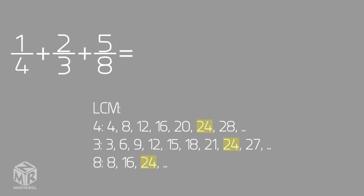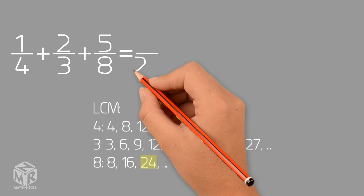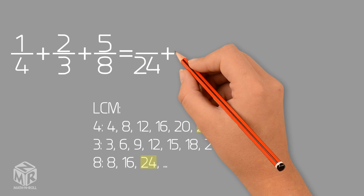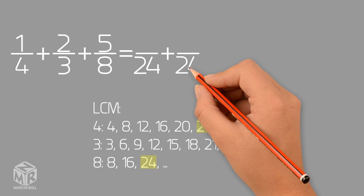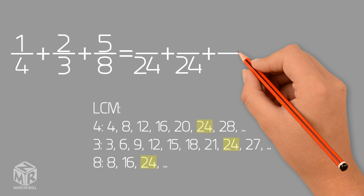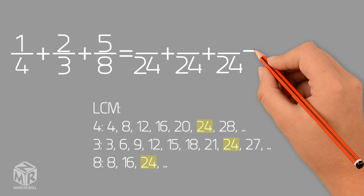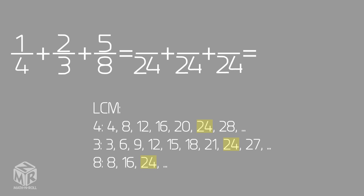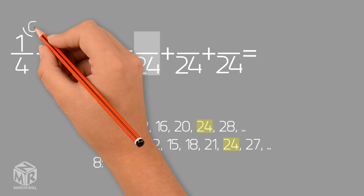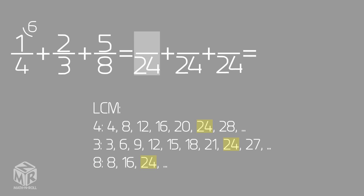So we rewrite the fractions with 24 as the denominator. To find the equivalent fraction of 1 over 4, we multiply both parts of the fraction — the numerator and the denominator — by 6. This gives us 6 over 24.